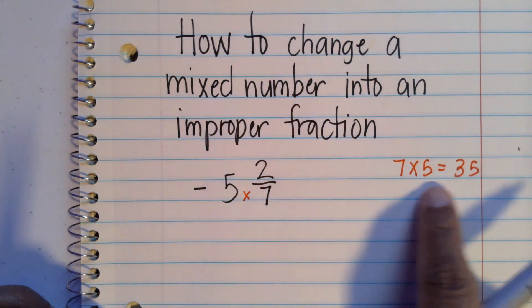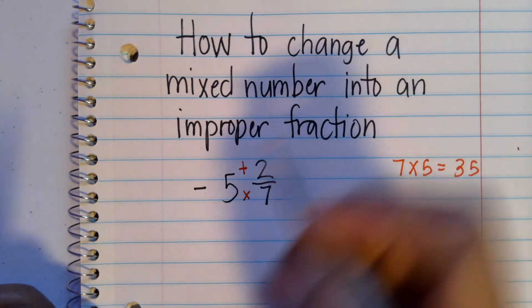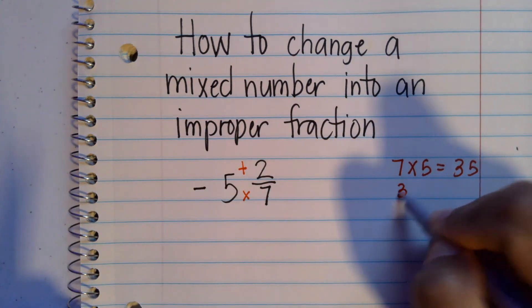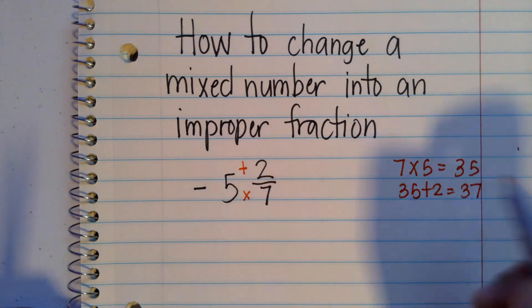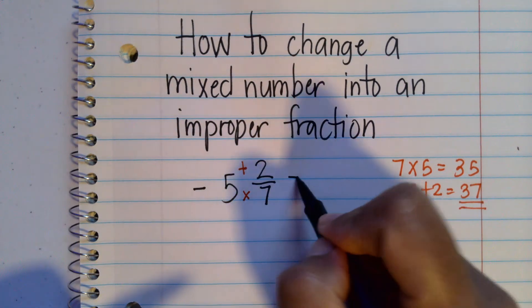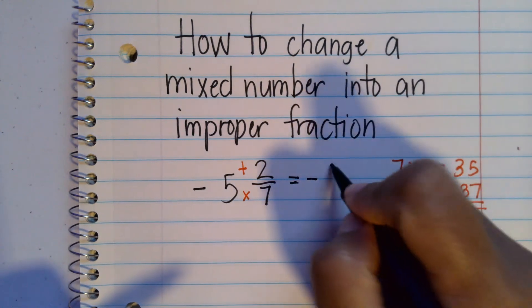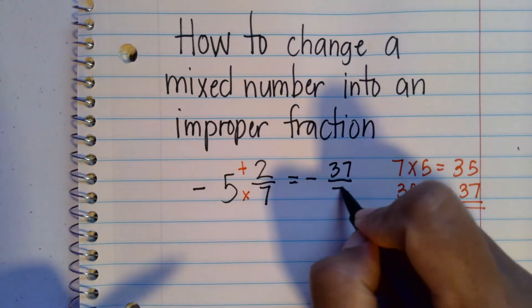And then, whatever result you get, which in this case is 35, we're going to add that to the numerator. So we have 35 plus 2 is equal to 37. Now this 37 becomes the new numerator. So this is going to be equal to negative 37 over 7. So you keep that denominator.